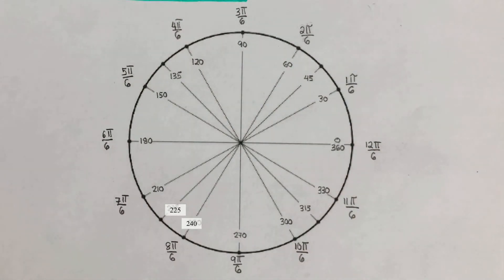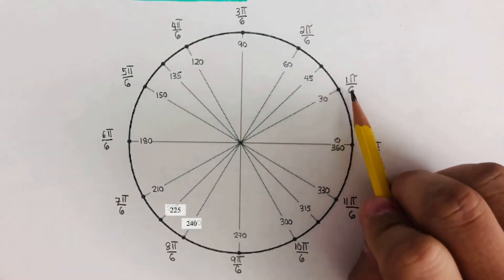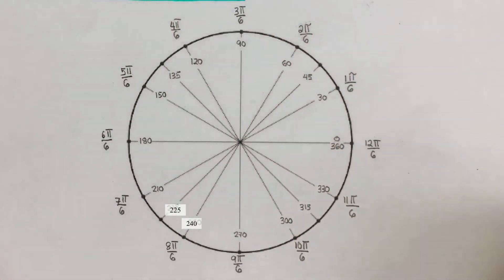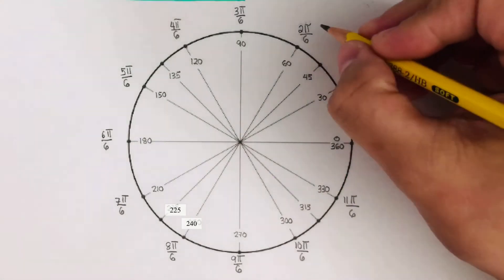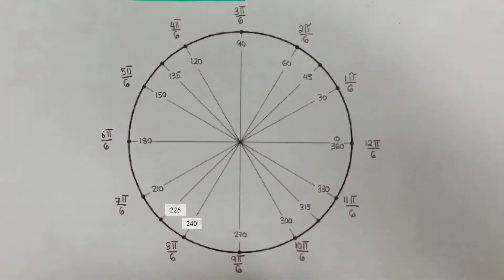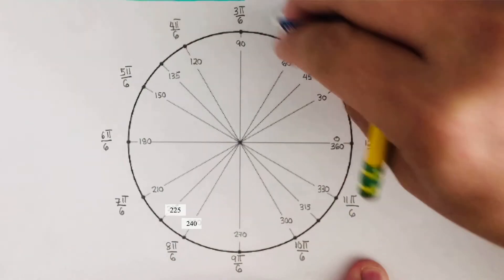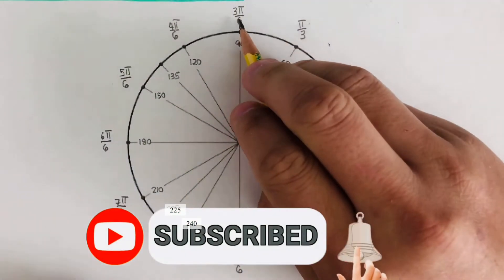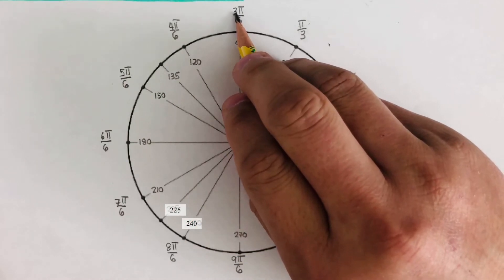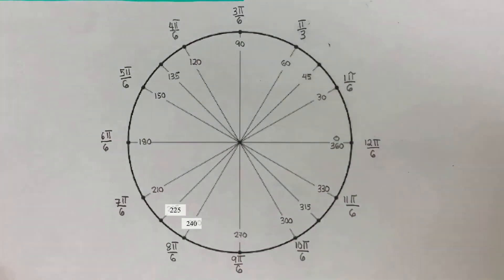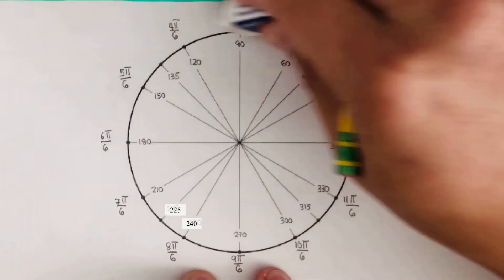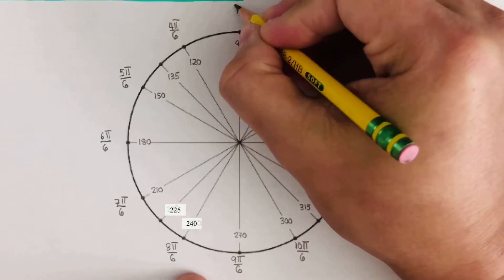Now we go back and simplify them. Some of them here can actually be simplified. 2π/6 can be simplified as π/3 — reduce it to lowest term. So this can be rewritten as π/3. This one right here — 3π/6 — is divisible by 3: there's one 3 in 3 and there's two 3s in 6, so we can rewrite this as π/2.